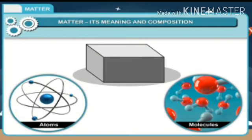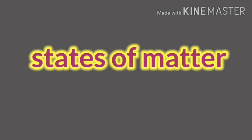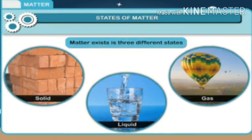Matter is made up of tiny particles called atoms and molecules, which cannot be seen by the human eyes as they are tiny and small. We have three states of matter — matter exists in three different states: solid, liquid, and gas.